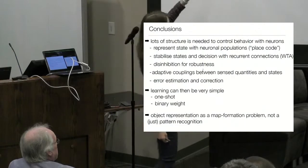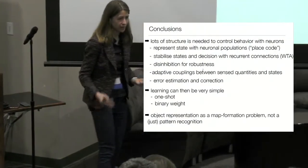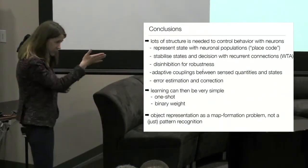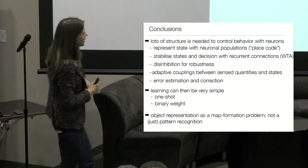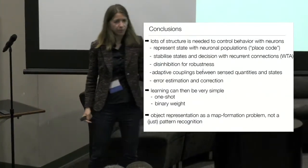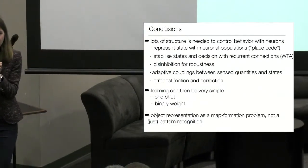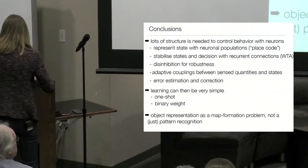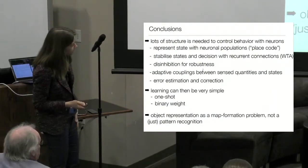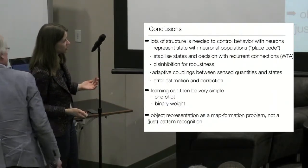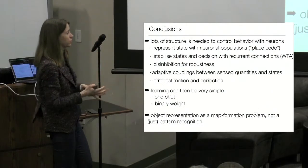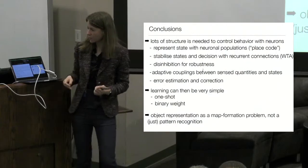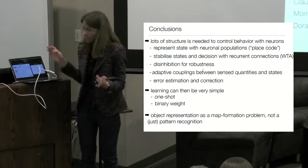If you have the structure, then learning can be very simple. It can be one shot, just update of connection. I sensed a wall here, I found certain feature in a certain location, I just learned that. And the weights can basically be binary, because of this place code that we use, where it is either there or not. So either these two values are connected or not. So it all can be very simple. And finally, object representation and object learning can be more of a map formation problem, and not just pattern recognition. So really, the SLAM is some fundamental mechanism that can be used all over. And thank you very much for your attention. If there are some questions, we have time to jump in.